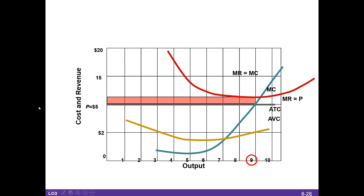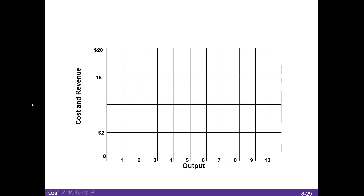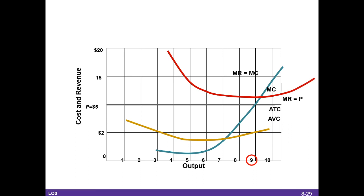We know if they're going to produce, they should produce at 9. We need to find out if they should produce. So we will do the same setup again. And I'll put my AVC here, because this is what I want to look at. I want to see what is my fixed cost. So you can see it's the area between ATC and AVC is my fixed cost. So this whole area is fixed cost.